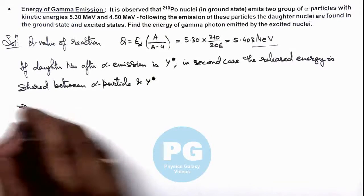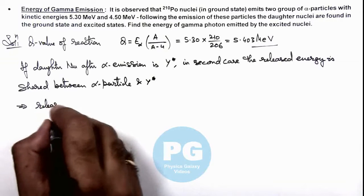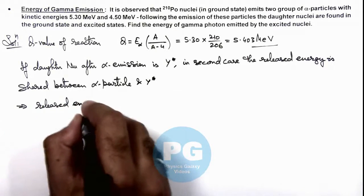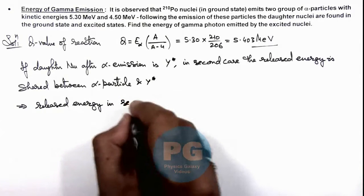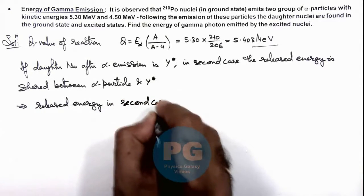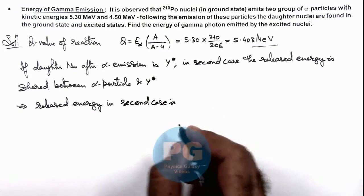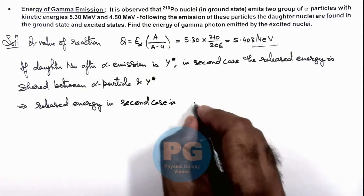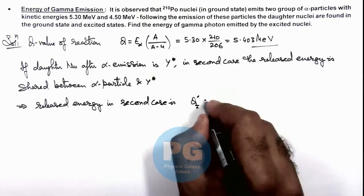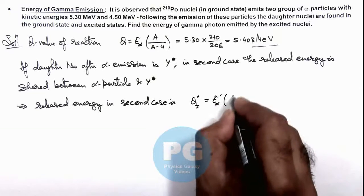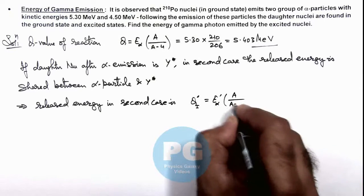This implies we can calculate the released energy in the second case. We can write this as Q', the Q value of this step. Q' = E'_α × A/(A-4).